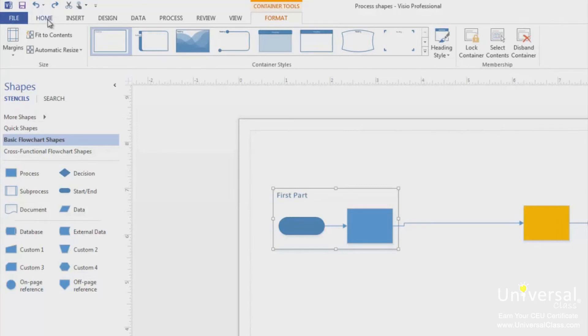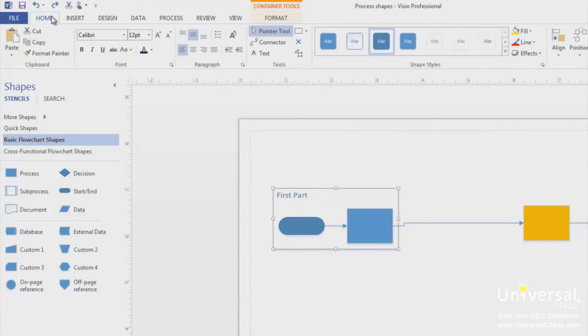You can also go to the home tab and use the paragraph tools to set the position of the header or the font tools to format the header and the text.